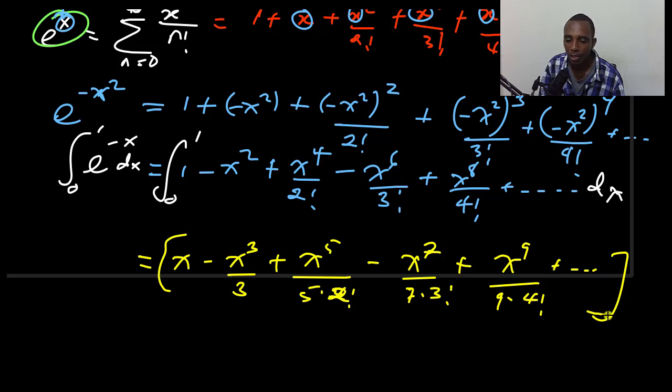So we're putting in limits from 0 to 1. And notice here that when I put in the lower limit, which is 0, everything is just going to be 0. So I'll just put in the upper limit.